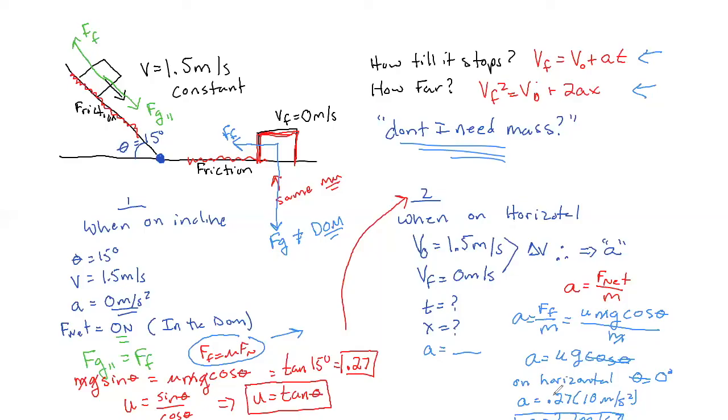Now, from here, guys, you can finish and answer how far or how long will it go. If you want to know how far, we're going to have 0 equals 1.5 plus 2.7 T. Y'all can solve for T. And in this one, we'd have 0 equals 1.5 plus 2 times 2.7 X. That will tell you how far it came to a stop.